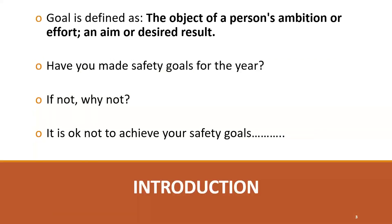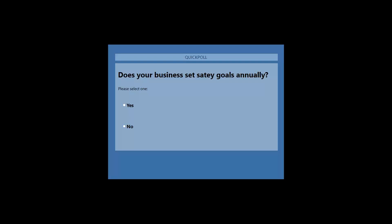So what exactly is a goal? A goal is defined as the object of a person's ambition or effort — an aim or desired result. Has your business set safety goals for the year? Let's kick off with a poll question to get everyone engaged and help me figure out where our participants are at today with goal setting.